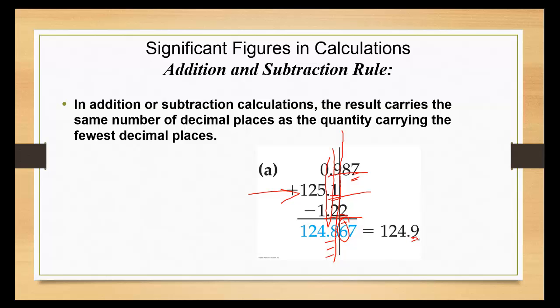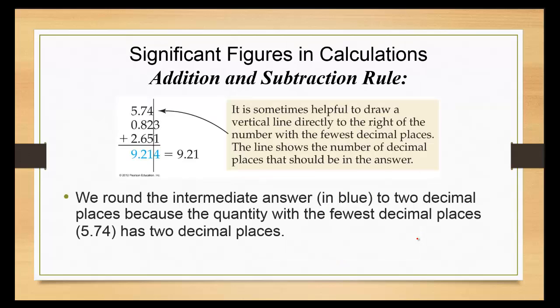Let's take a look at that again. We round the intermediate answer to two decimal places because the quantity of the fewest decimal places has two decimals. So for here, the four is the last one. The second number, the three is the last one. The third number, the one is the last one. You want to end it where whichever number ends first. So because of that, I'm going to end it at that one. So 9.21.